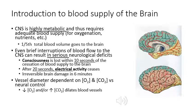Let's talk about the vascularization of the brain. A fifth of your total blood volume goes to the brain, and you can have irreversible brain damage within six minutes if you shut off the blood supply to an area. The vessel diameter is not governed by the sympathetic nervous system — it's governed more by the concentration of oxygen, carbon dioxide, and hydrogen ion, determining whether they're going to dilate or constrict.